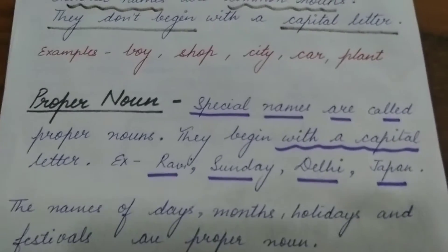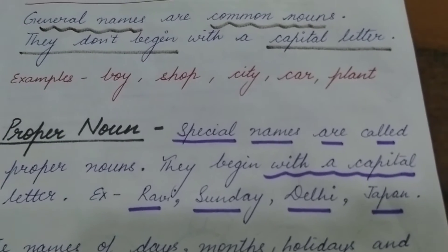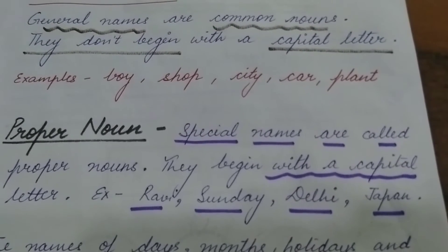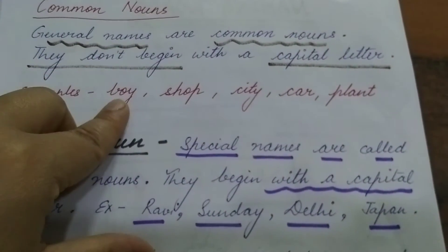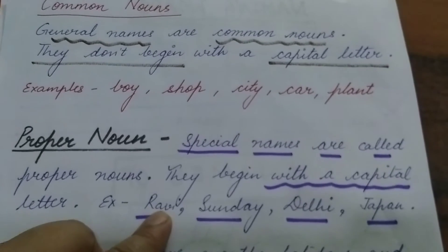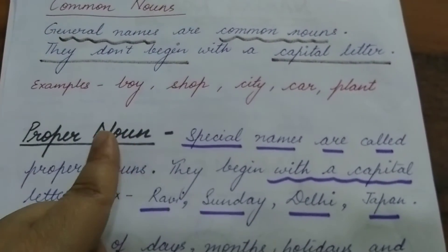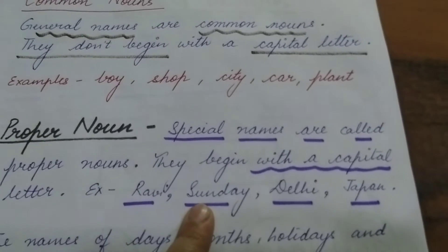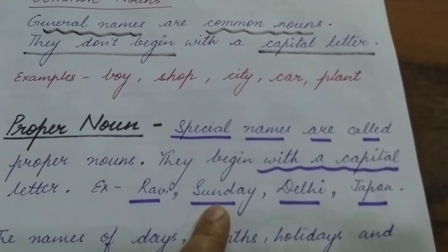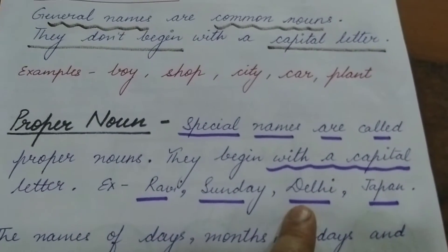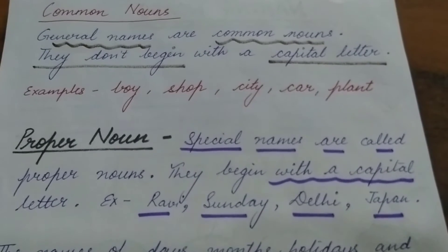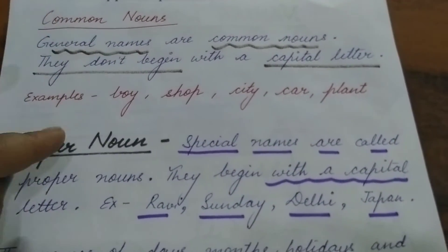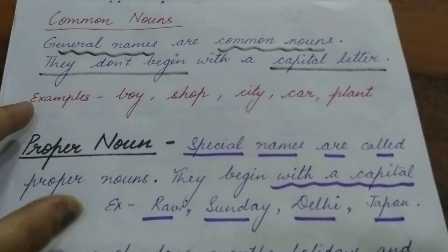Now let's move to proper noun. Proper means particular, specific or special names that are given to a person, place, animal, thing. Like Ravi — Ravi is a special name given to a boy. Boy is general, so it is common noun. But Ravi is a special name, so it is proper noun. Sunday is the name of a day — it is a special name given to the last day of the week. Delhi, Japan — Japan is a special name of a country. If we talk about 'country' only, that is a common name. But if we say India, America, Japan, it is proper noun.